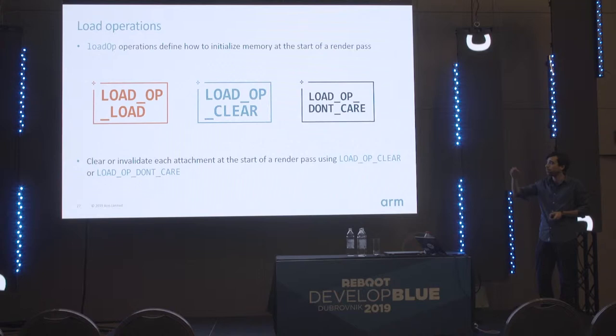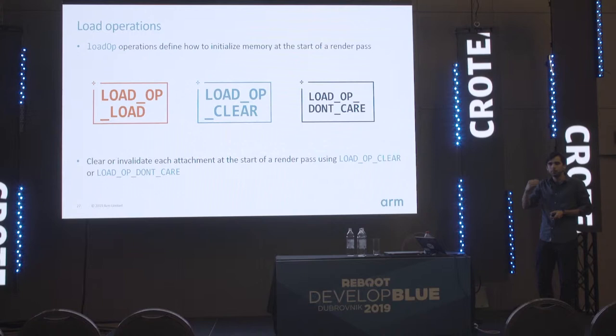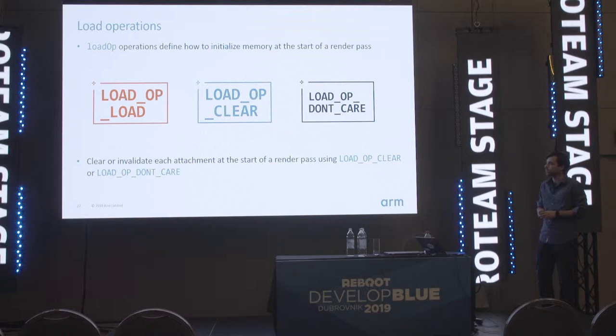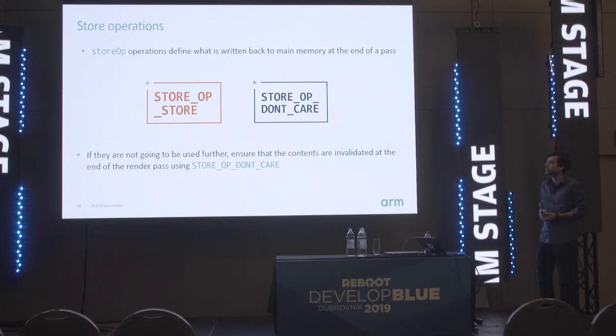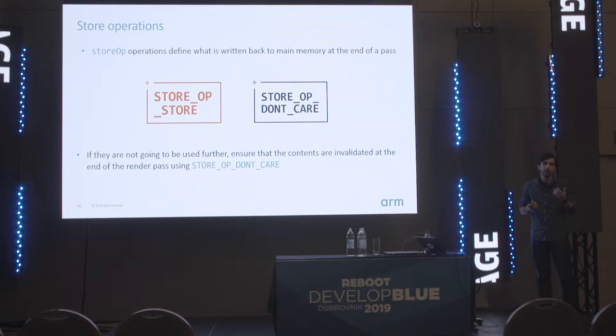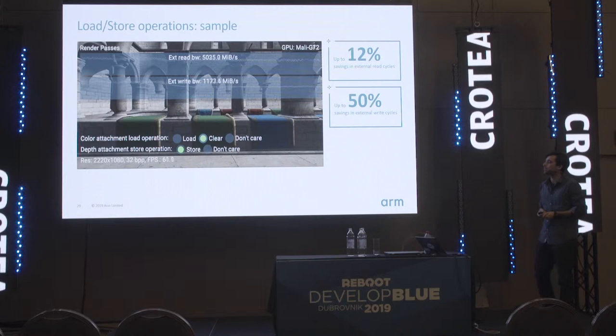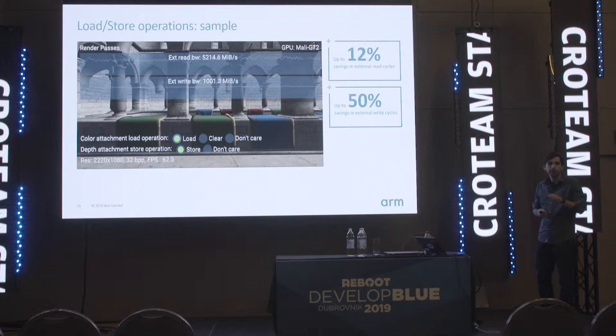In the tutorial, we take you through these three options and explain when to use which — this is very important because, as was mentioned in the panel, using the wrong option can lead to very costly read and write operations that are essentially not needed. Similarly for store operations, you have a choice between store and don't care. For the depth attachment, most of the time you won't need it in further passes, so you can also set it to don't care.